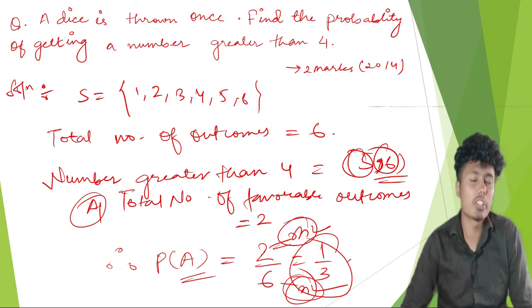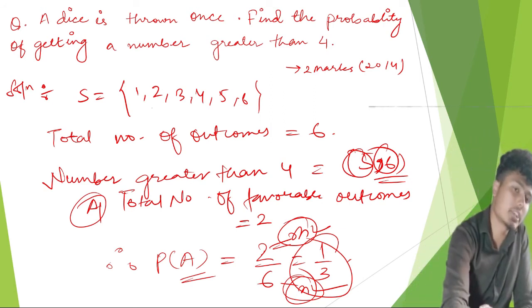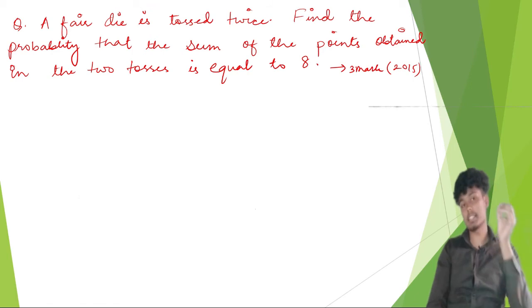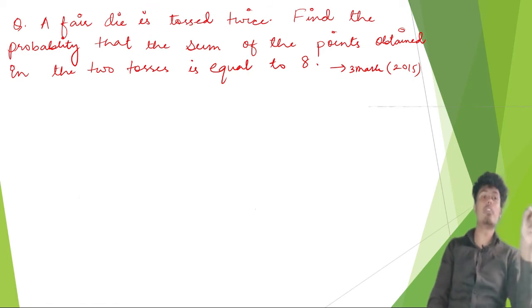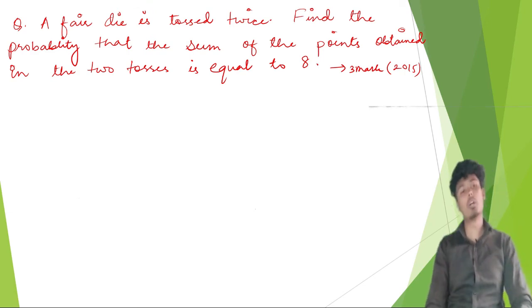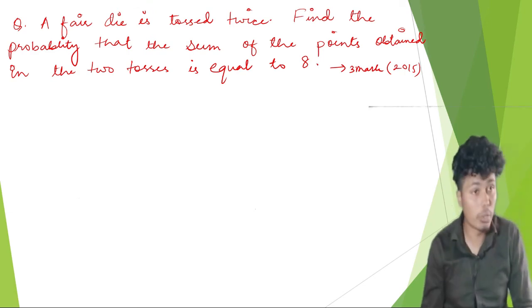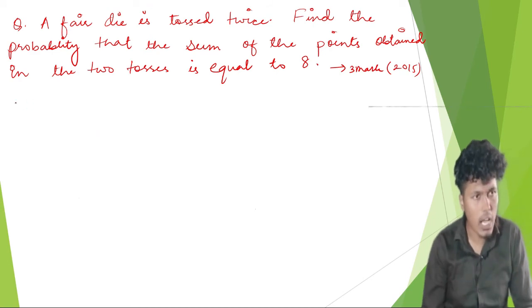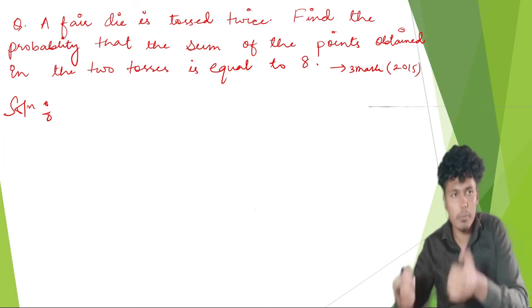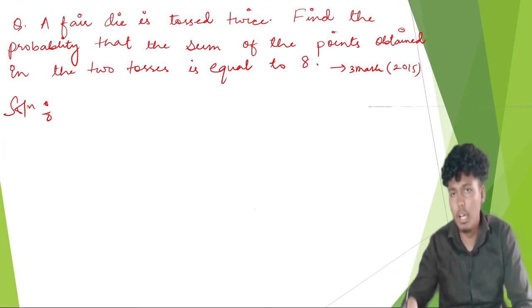Next question, asked in 2015 for three marks: if a fair die is tossed twice, find the probability that the sum of the points obtained in the two tosses equals 8. We toss one die twice. We need to find the probability that the sum of the two results equals 8.